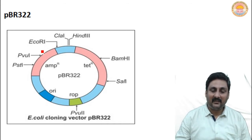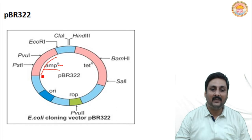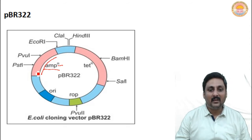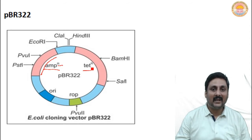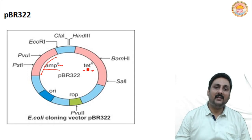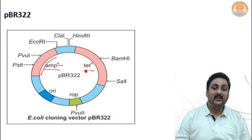In a vector, what is present? This is Ampicillin Resistant Gene. This is Tetracycline Resistant Gene — TETR. These are the Selectable Markers, selectable genes present in the vector.